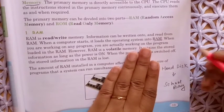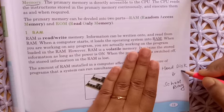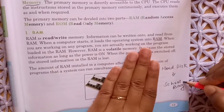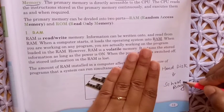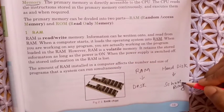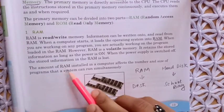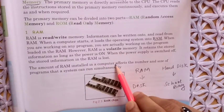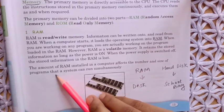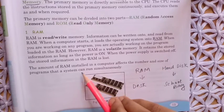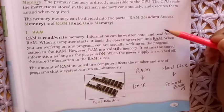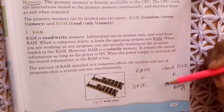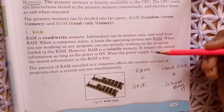Suppose if RAM were not given — working directly from the hard disk would be very difficult, just like trying to open a book while it is still inside a school bag. Without a desk, there would be a problem. The amount of RAM installed in a computer affects the number and size of programs that a system can run simultaneously. The bigger the RAM size, the better and faster the programs will run.